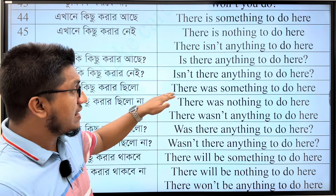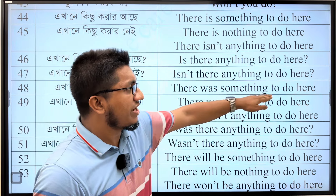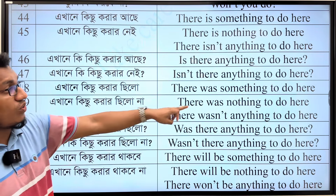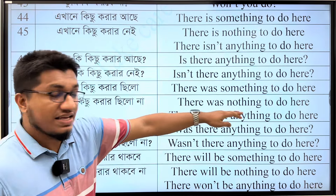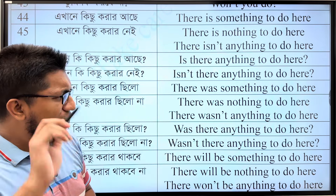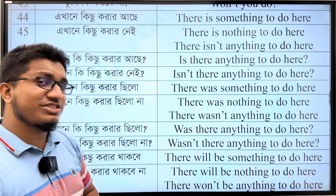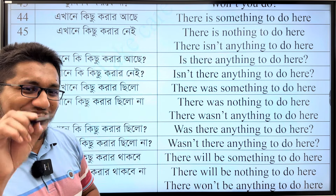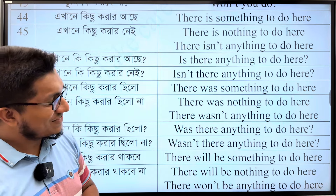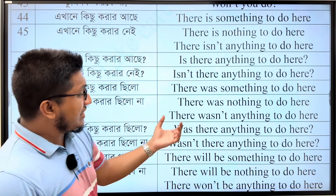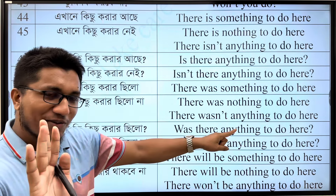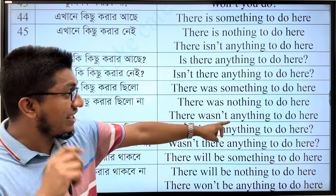Next sentence. There was something to do here. There was nothing to do here. Let me know in the comment box — comment below what you have to do here. There wasn't anything to do here. But remember, there was nothing to do here.